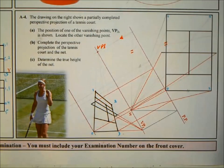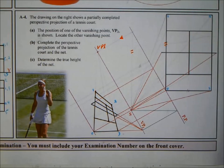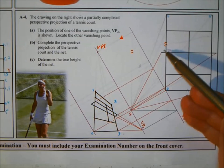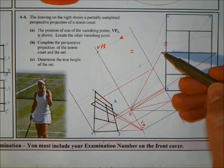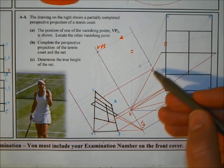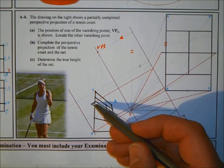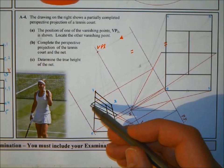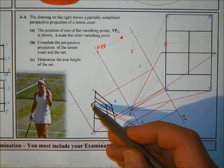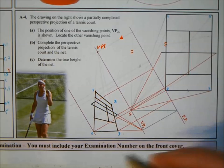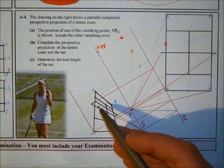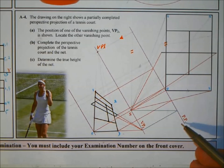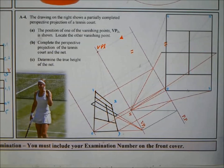The perspective drawing is done. For part c, determine the true height of the net. The net is this line here, brought down into the perspective view. To find the true height, it can only be measured if the object is touching the picture plane — resting on it. So we need to project the height of the net down to the ground line.